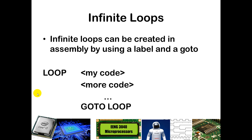An infinite loop is generally built with a label — in this case, I've put the label 'loop' here. You put whatever code you want to run inside that loop, which could be one or multiple lines of assembly. At the end, you just have a 'goto loop', so you execute the code, get to the goto, and start all over again. For a digital clock, you'd increment time in memory by one second, update all displays, delay for one second, and then go through the process again. That's what happens inside an infinite loop for a digital clock.